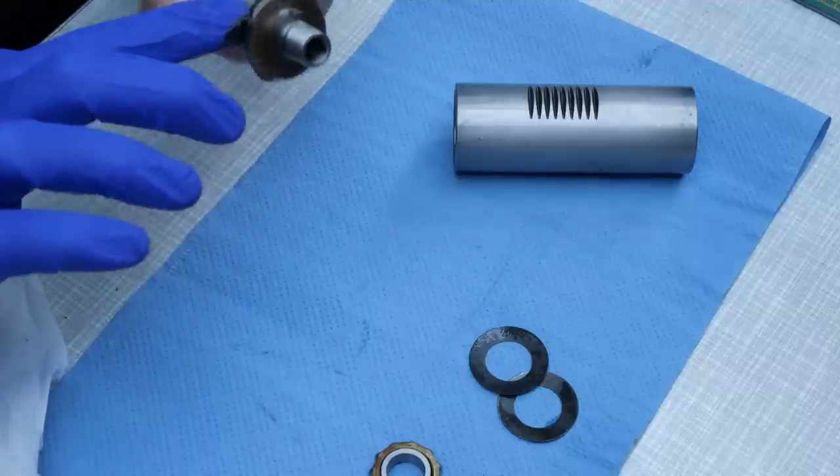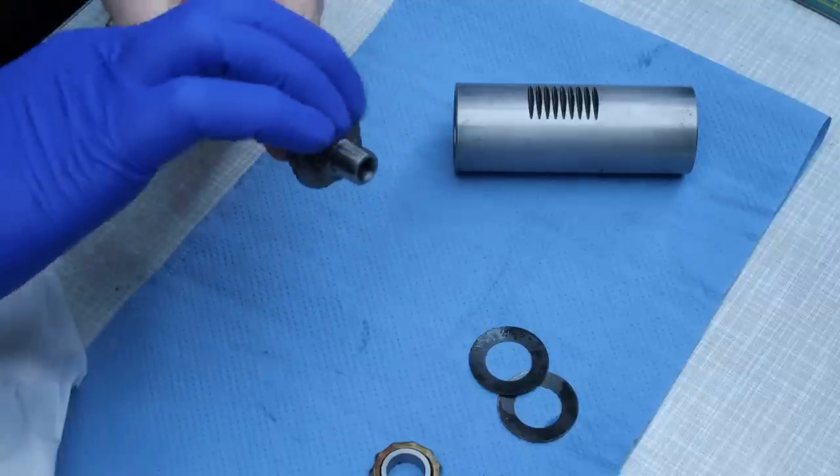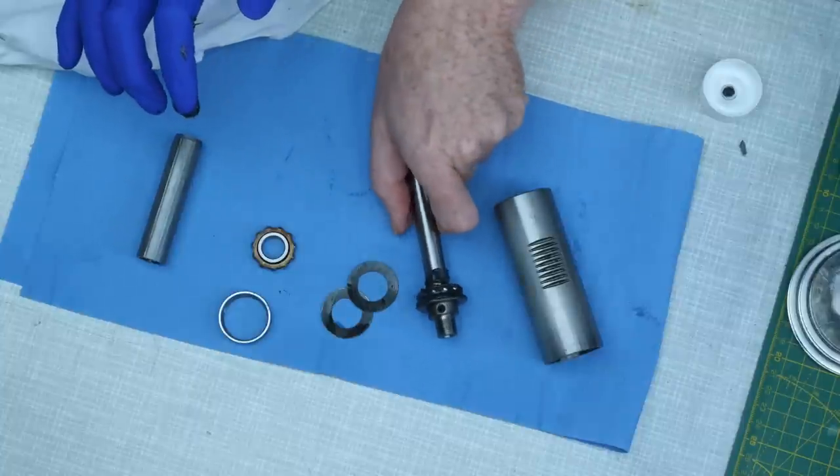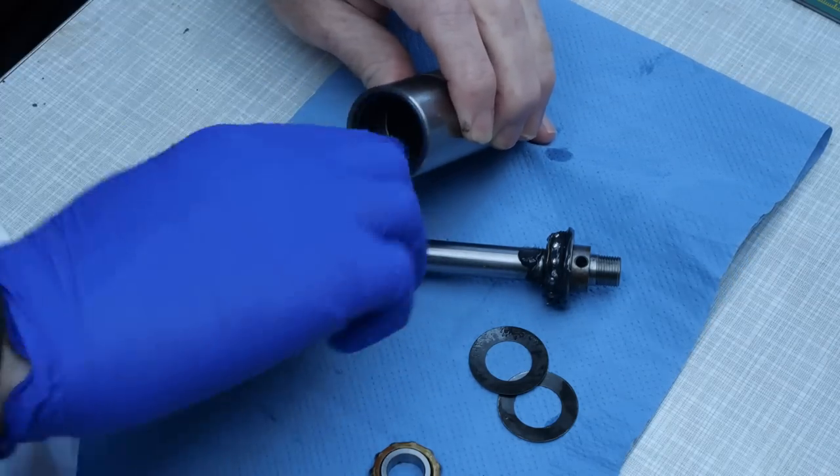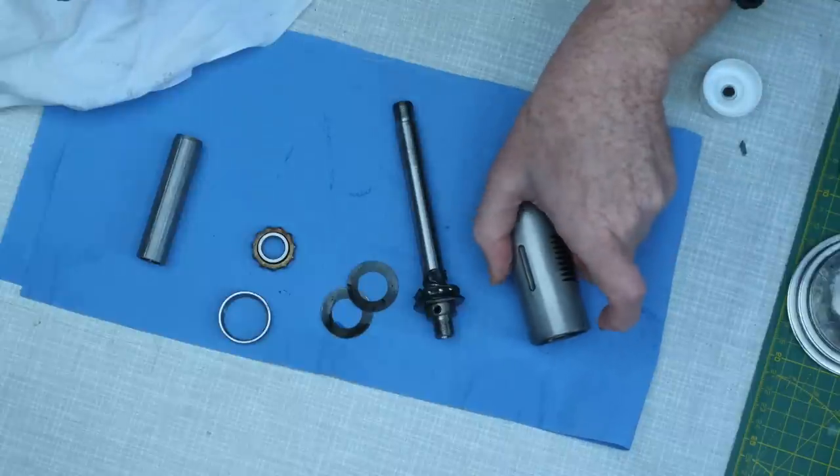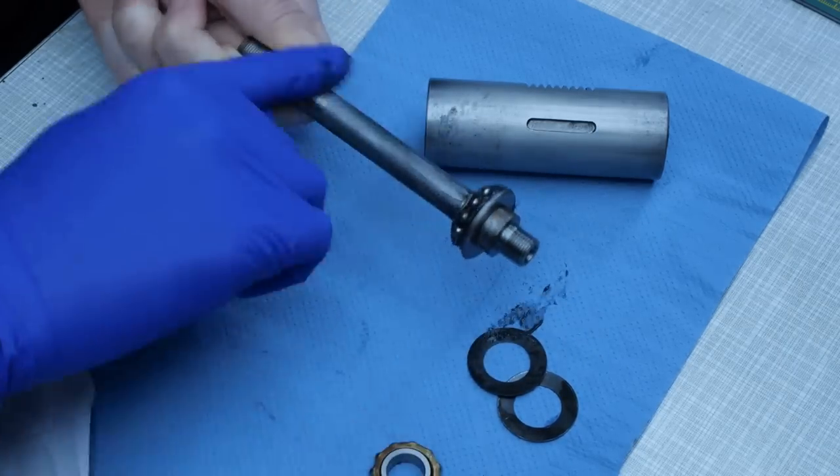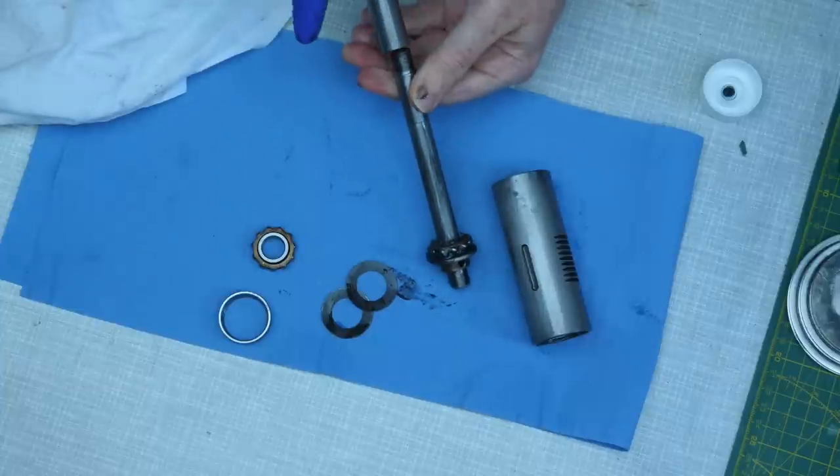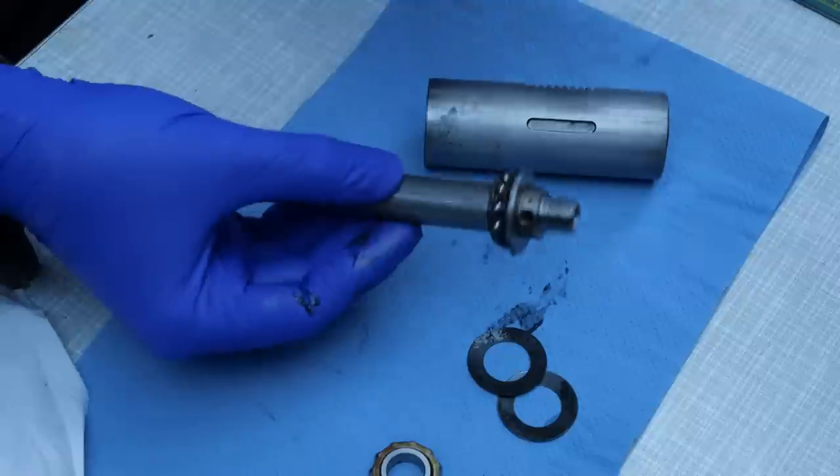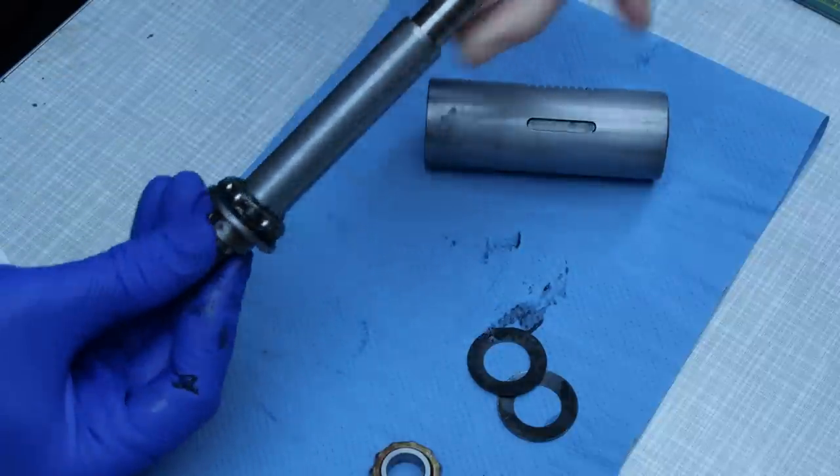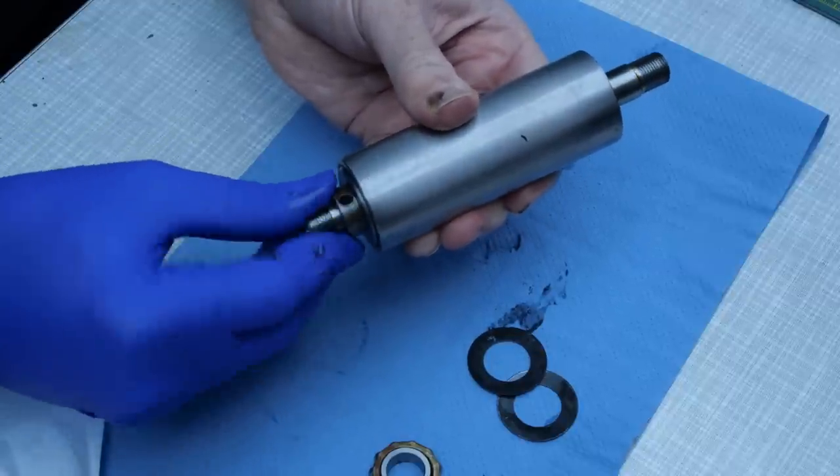Check out Bill's workbench video on overhauling the Unimat cell headstock for a much better guide to greasing these bearings. Once I felt like I had enough grease between the balls, I lightly coated the outer race. Now the spacer can be fitted onto the spindle shaft. The spacer needs to go the correct way around, with the large chamfer on the end furthest from the front of the spindle. The shaft can now be placed back into the spindle housing, fitting the two halves of the bearing together.